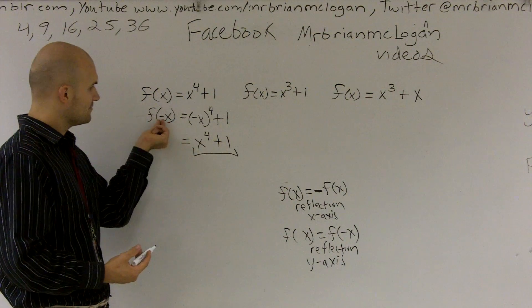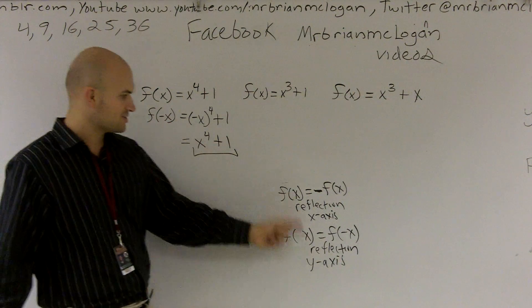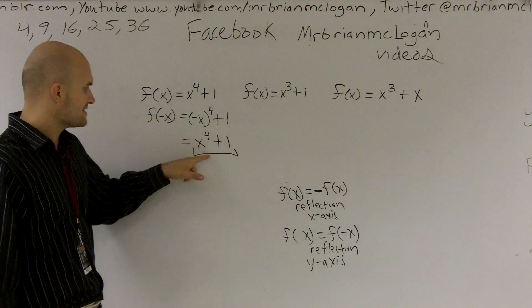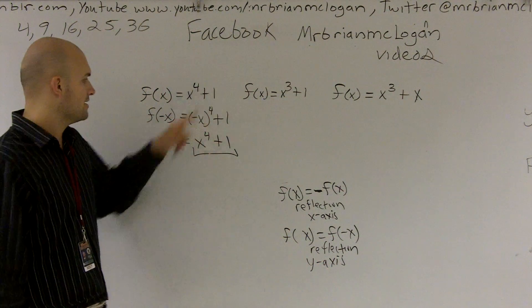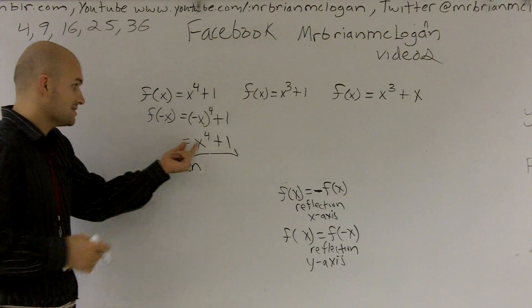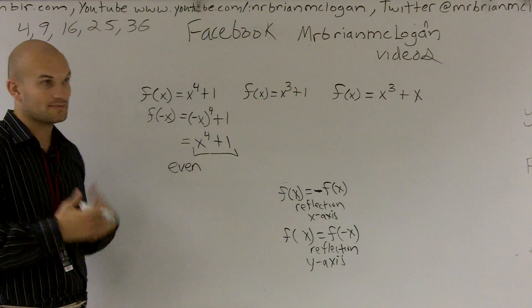Remember we talked about symmetry. If the right side is symmetrical with the left side, then it was even. When I plug in negative x, which tells me I'm checking the reflection of the y-axis, if that's giving me back the original function, then I have an even equation or an even function, which in this case, x to the 4 plus 1 is the same as x to the 4 plus 1, so it's even.